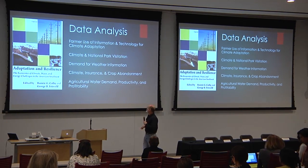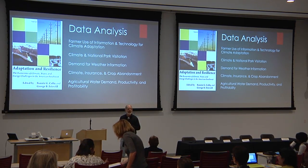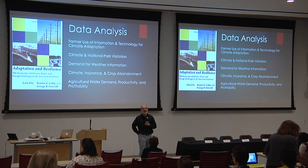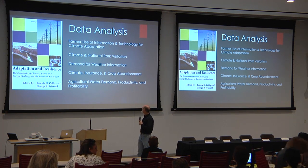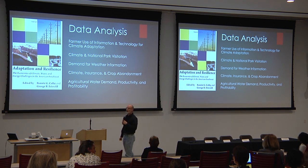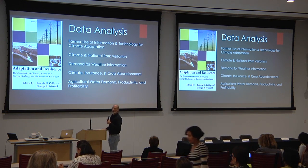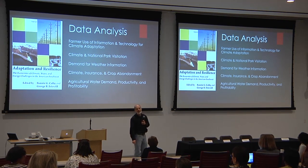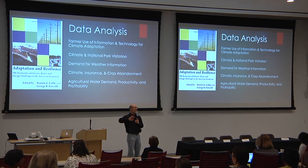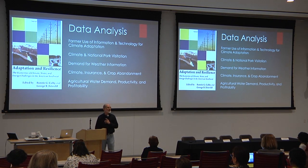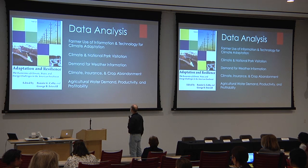We've also been using multivariate regression to look at climate and national park visitations. A lot of early studies suggested that when it got warmer, you'd have more visits to national parks, but those studies tend to look at higher latitude areas. When you look at the Southwest, the converse is the case. We've also been looking at climate, crop insurance, and crop abandonment. A lot of work on the effects of climate extremes on agriculture has focused on yields, but in 2011, 60% of Texas' cotton crop was completely abandoned — that doesn't count when people estimate yield per harvested acre. Most studies that look at yields often ignore abandonment, and that's one of the things we're looking at.